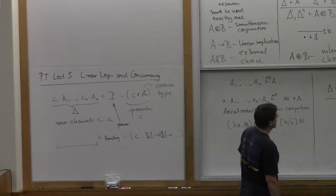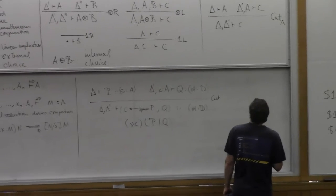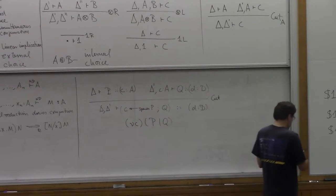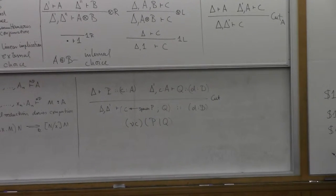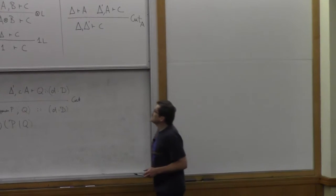In a functional setting we don't have that because we have a term here and all we do with the term we evaluate it down to a value then we're done. But if we have a process it has to continue to interact with its environment. And so we name the channel along which it interacts with its environment.